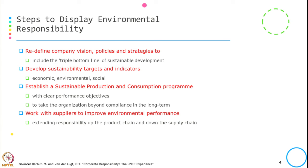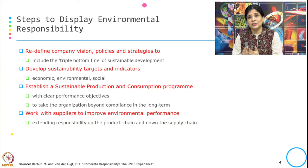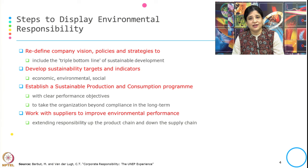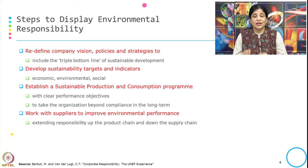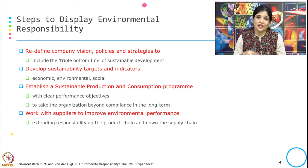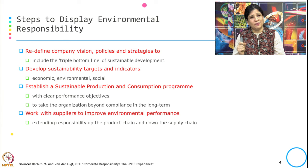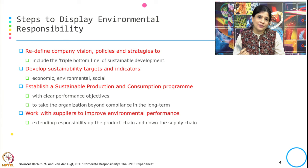They have listed down what are the steps to display environmental responsibility. The first step — the first action point a company should take — is to redefine their vision, policy, and strategy. They have to include the triple bottom line of sustainable development in their vision, policy, and strategy.